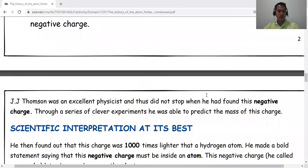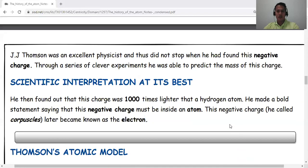J.J. Thomson was an excellent physicist. He made a huge contribution in the field of chemistry. He did not stop when he found out about this negative charge. Through a series of clever experiments, he was able to predict the mass of this charge. He came up with the finding that this charge was 1,000 times lighter than hydrogen atoms. Very clever.